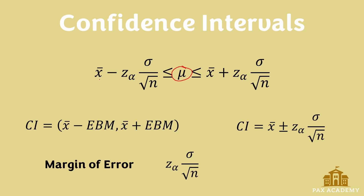If we're calculating a 95% confidence level, what it's essentially saying is that we're 95% sure that the population mean is between these two values. The lower value is going to be x-bar, the sample mean, minus the z-value times the population standard deviation over the square root of n.